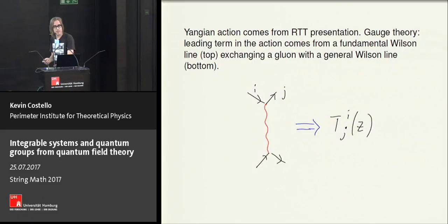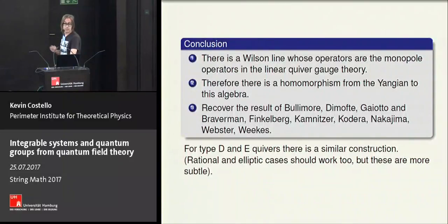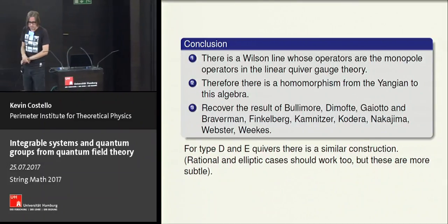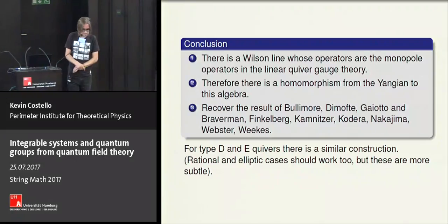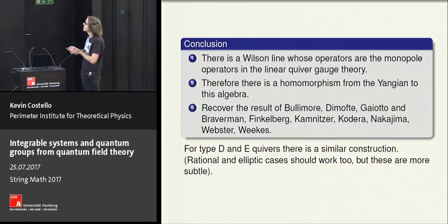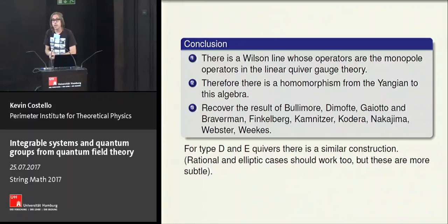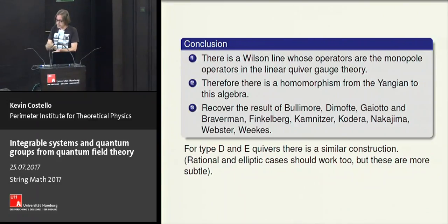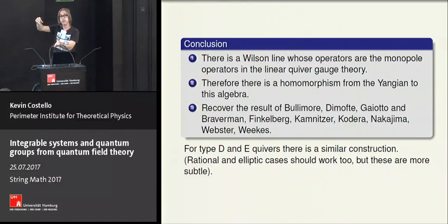In the D and E cases, with a little bit of work, one can do something similar using the presentation of the Yangian we derived in those cases, except for E8. In the trigonometric case, which we've been considering, to make everything work we need to choose a boundary condition when z goes to infinity where all fields go to zero. With this boundary condition, when we compactify in the z-plane there are no zero modes and the effective 2D theory is massive — in fact infinitely massive after twisting — with no propagating degrees of freedom.